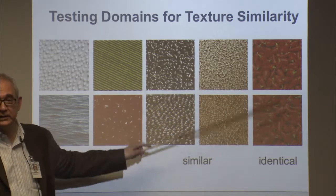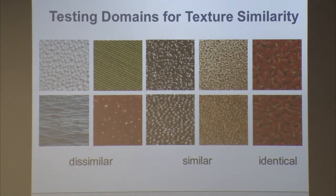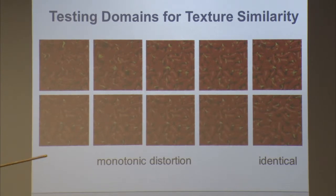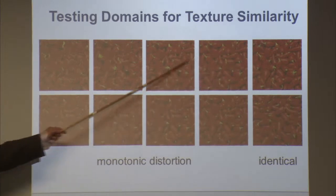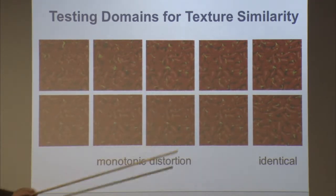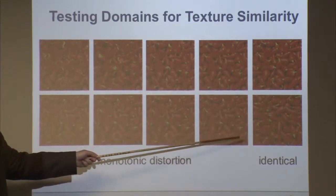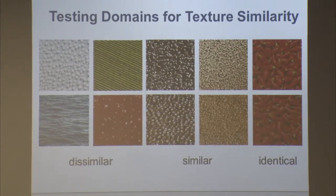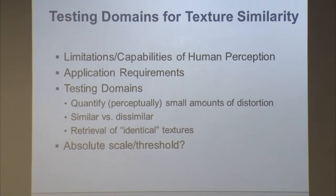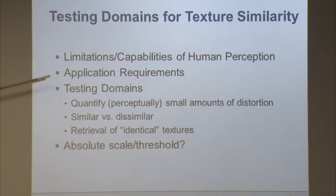Most importantly, we want to know that when we have identical textures the metric recognizes them as such. For retrieval that's the most important thing. For coding, finer detail matters — we have an original texture with geometric distortion and need to order distortions by severity. The same applies to JPEG distortion. A mistake many people make is trying to impose ordering where none exists. We decided that to test the metrics, we need to define domains based on what humans can do and the requirements of applications.